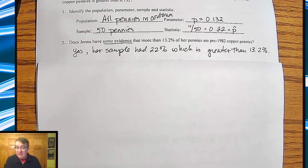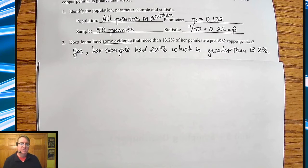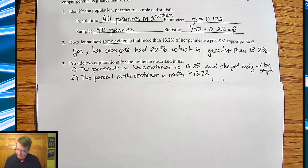Does Jenna have some evidence that more than 13.2% of her pennies are pre-1982 copper pennies? Well, yeah. She got 22%. That's some evidence. Isn't it enough to say that something didn't happen? One sample is not always good enough. What are the two things that could have happened? The percentage of pennies in her container is actually 13.2, and she just got lucky. It could also be that her container actually does have a higher percentage than 13.2%. So, how do we know?